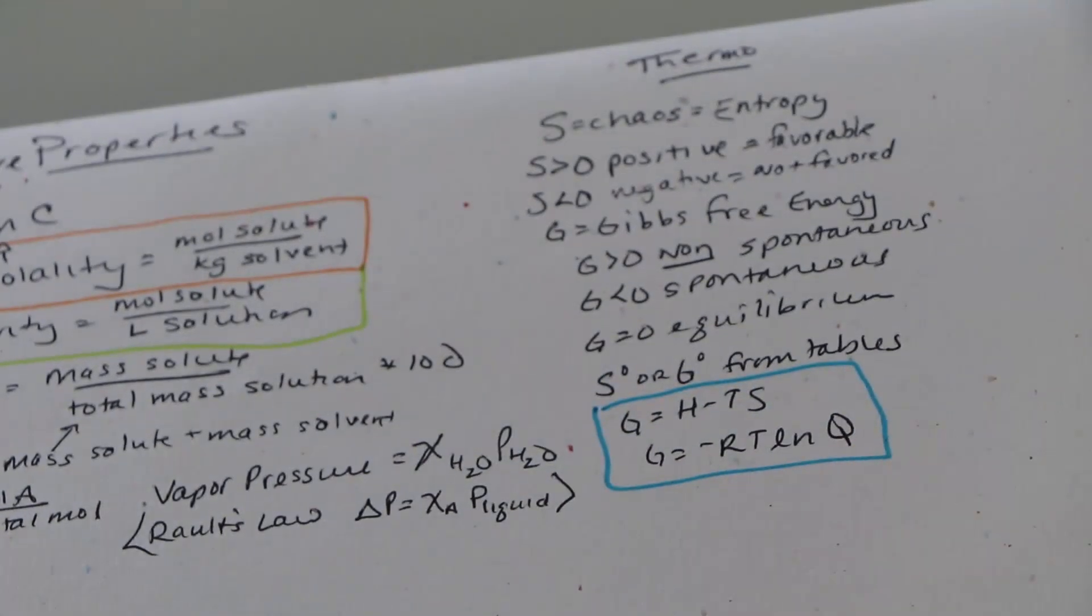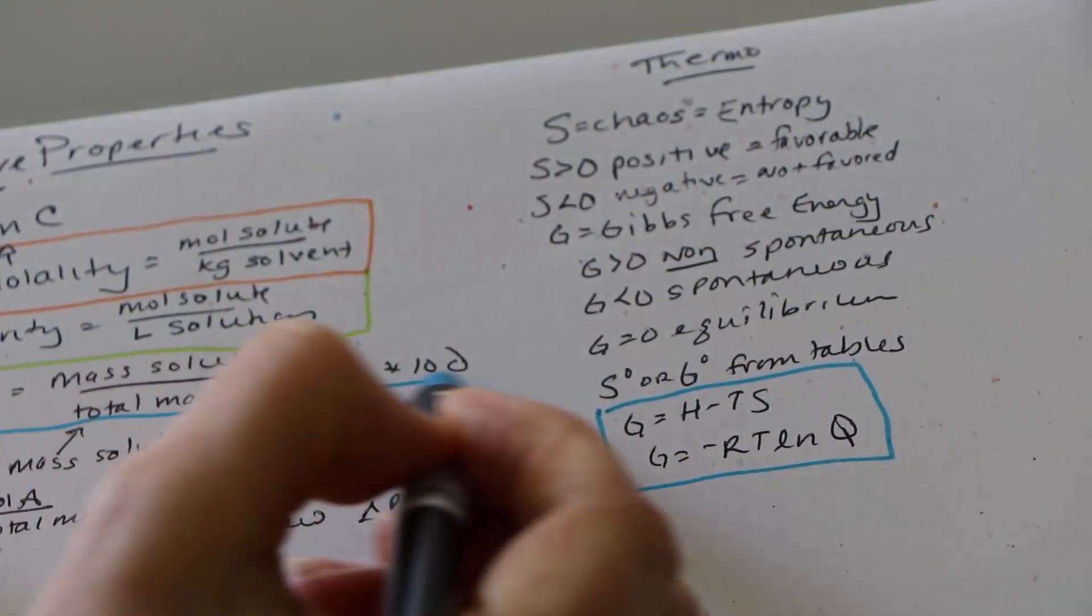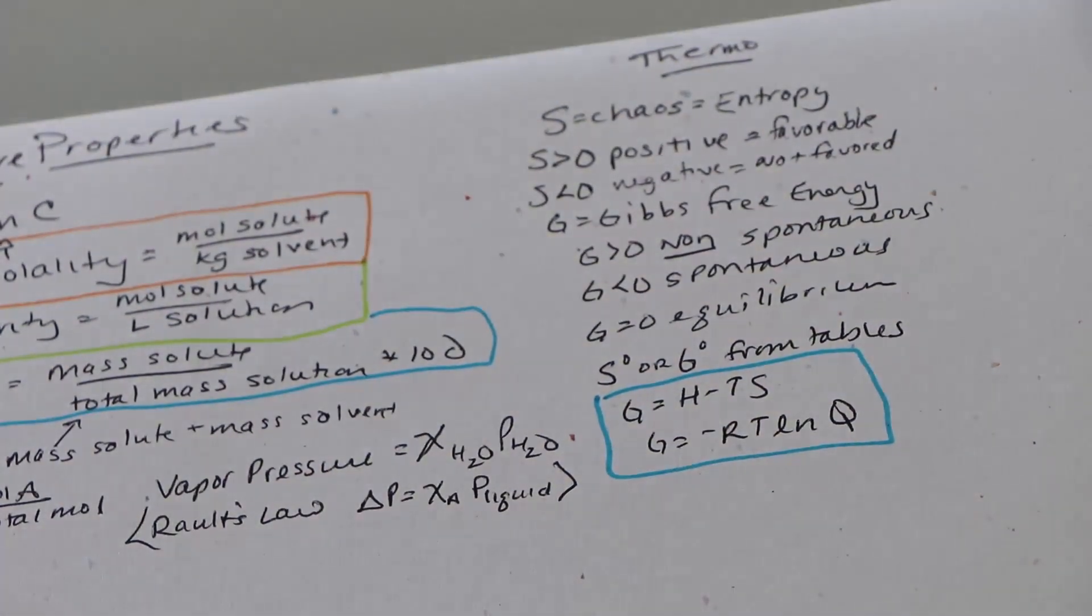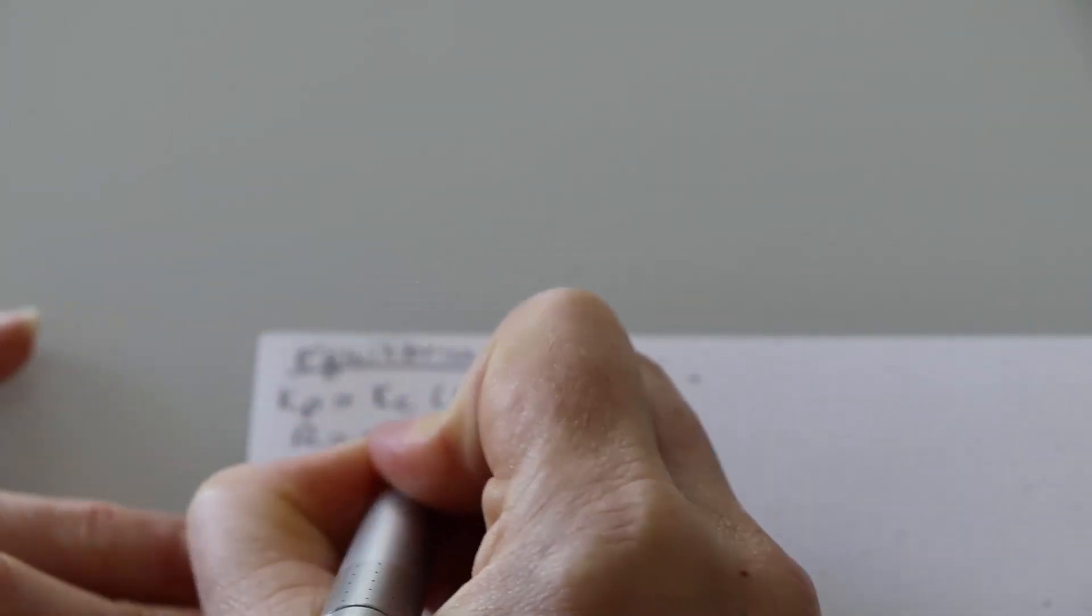When you have that little circle so S naught or G naught that means it's from the tables. When G equals H minus TS, G also equals negative nFLnQ. So then we're going to move on to equilibrium.